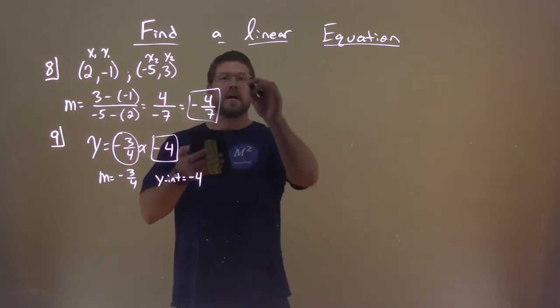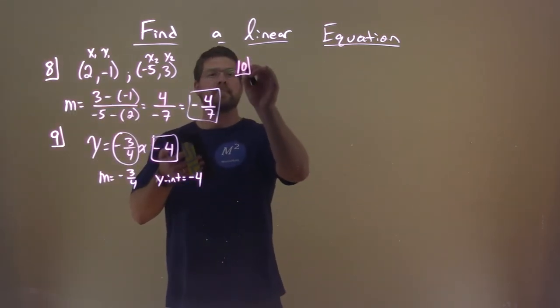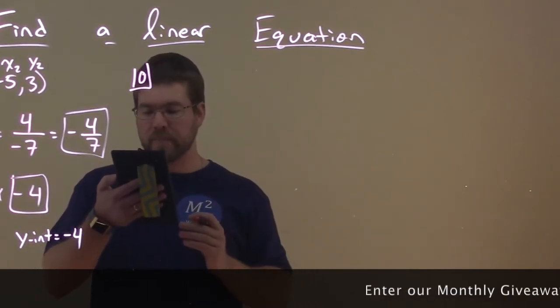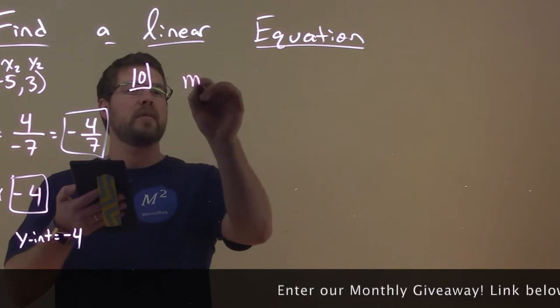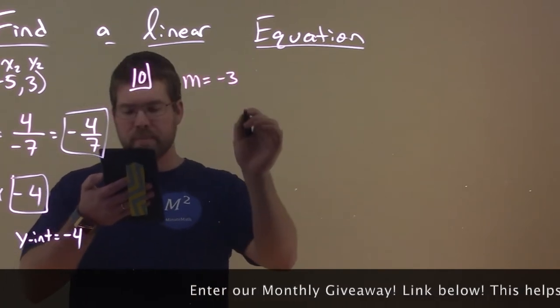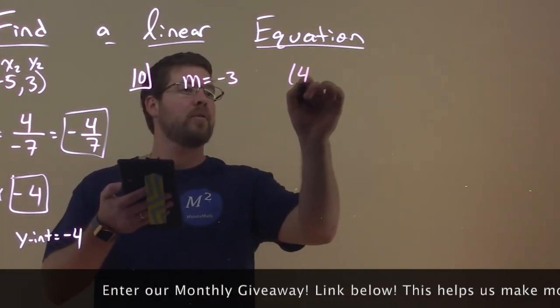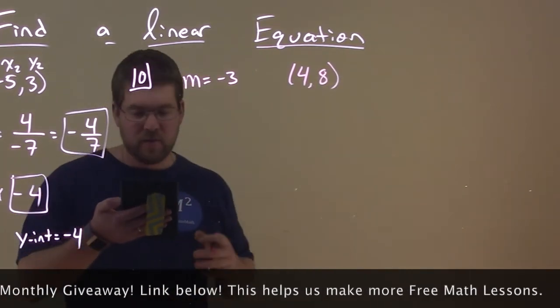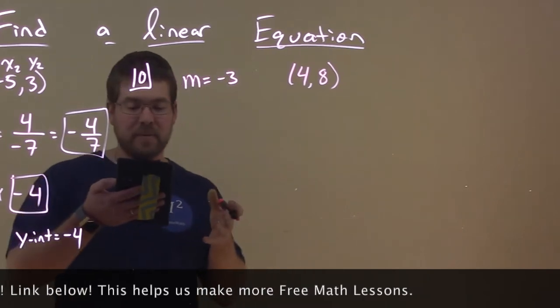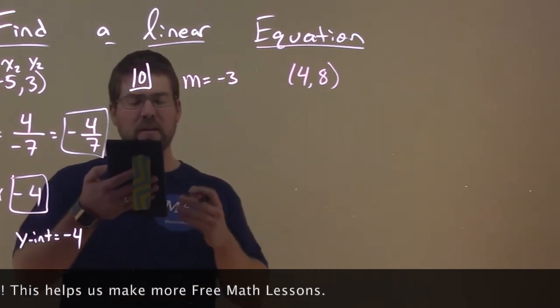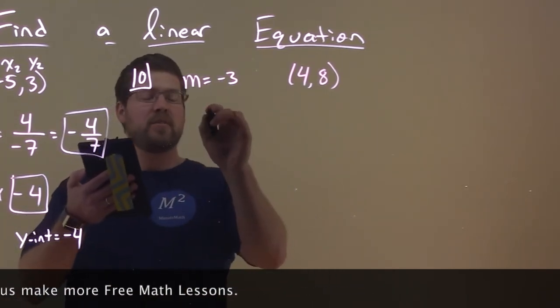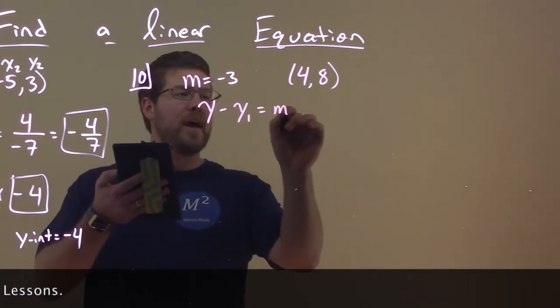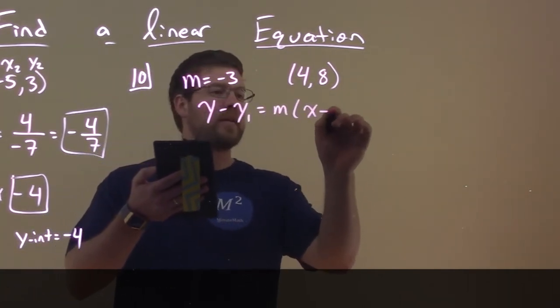So let's do an example with that, number 10. We're going to find the equation of a line given the slope and one point. Well, we have the slope here they give us as a negative 3, and the point is (4, 8). So that's our point and we have our slope. Our point-slope form, pretty easy there. We can use the formula.